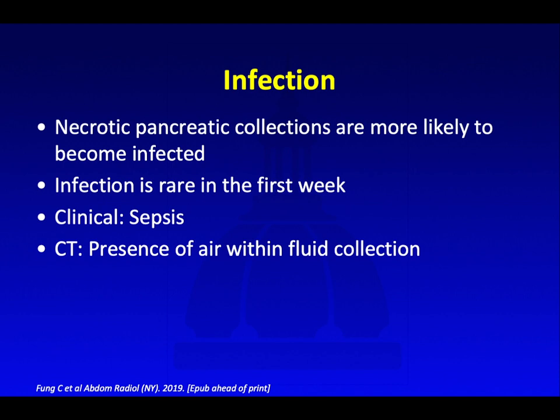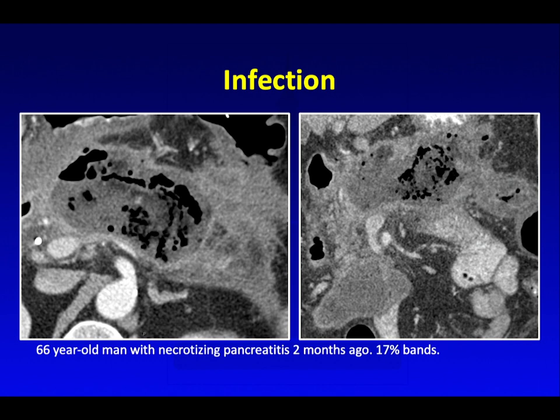Necrotic pancreatic collections are more likely to become infected as opposed to edematous fluid collections, and infection is rare within the first week. Clinically, the patients will present with sepsis. On CT, one of our biggest clues is if we see air within the fluid collection. This is an example of a patient who had necrotizing pancreatitis two months ago, who came in with 17% bands in his blood work. Here we see a very necrotic peripancreatic fluid collection with heterogeneous fluid and soft tissue components, and also a lot of air within this collection. In the absence of any previous instrumentation, we would strongly suspect infection as the culprit.